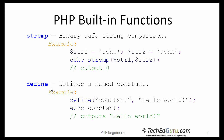The define function allows you to define named constants. Constants are much like variables, except for the following differences: a constant's value cannot be changed after it is set; a constant name does not need a leading dollar sign, which is convenient; constants can be accessed regardless of scope — they are available everywhere; and constants' values can only be strings or numbers. In this case, I am defining a constant named CONSTANT with the value 'hello world'. Once created, I cannot change its value. To access it, I say echo CONSTANT and it will display its contents.